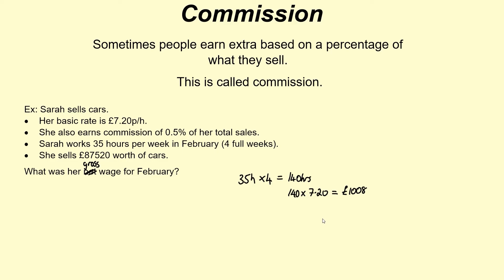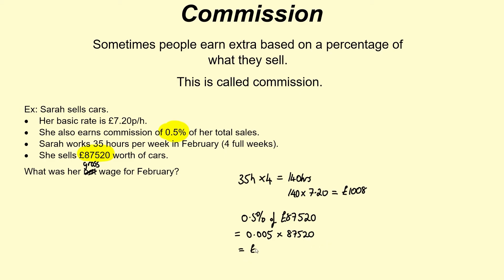We still have to take into account that she gets 0.5% commission. She's selling £87,520 worth of cars, so we need to figure out 0.5% of £87,520. Now 0.5% as a decimal — divide by 100 — is 0.005. So you do 0.005 multiplied by 87,520. That gives us £437.60.